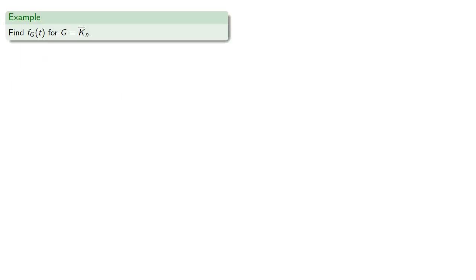So let's find the chromatic function for Kn complement. Remember Kn complement consists of n isolated points. If there are t colors available, each point can be assigned any color, so there are t to the n possible colorings, giving us the chromatic function.